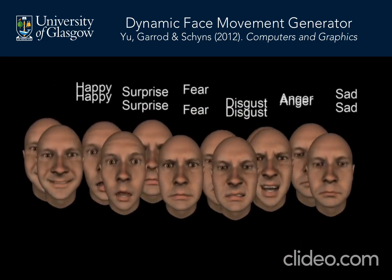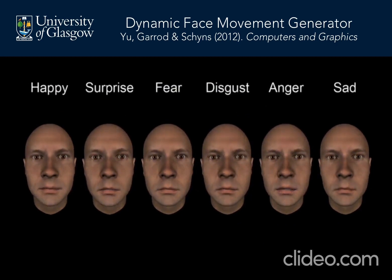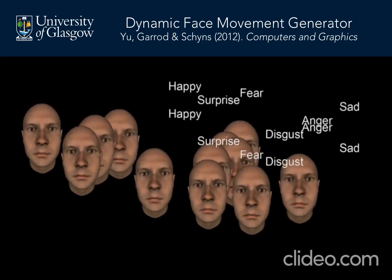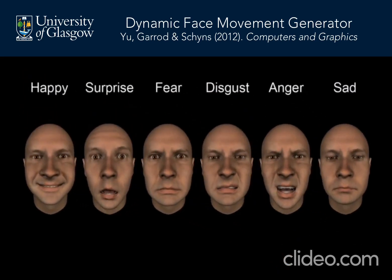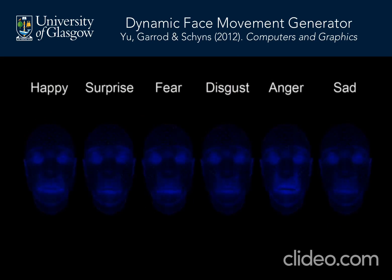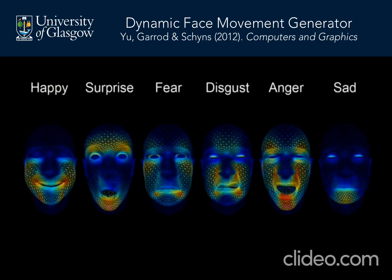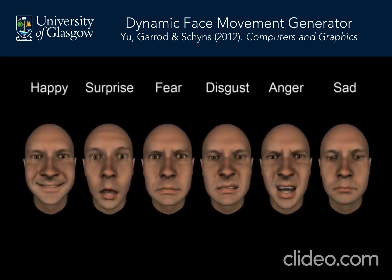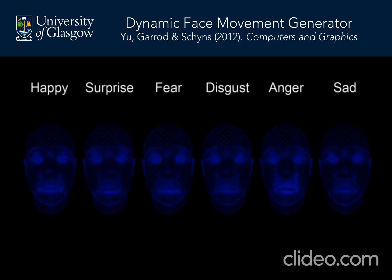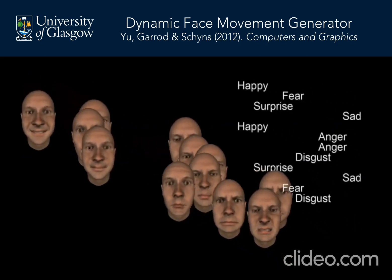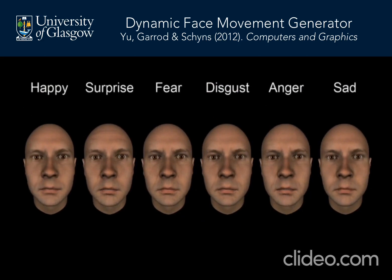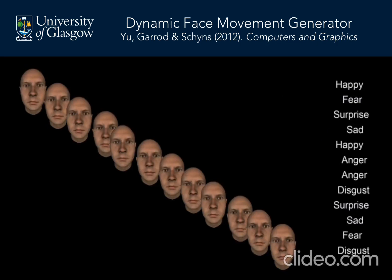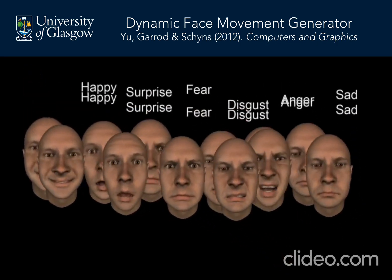After many such trials, we can then build a statistical relationship between the dynamic action unit patterns presented on each trial and participants' responses to produce a mathematical model of each facial expression. Importantly, this means that we have a precise quantitative representation of each facial expression that we can then formally analyze and compare across cultures. We also compute models for each individual observer to estimate population variance and to demonstrate replication of results across N participants.